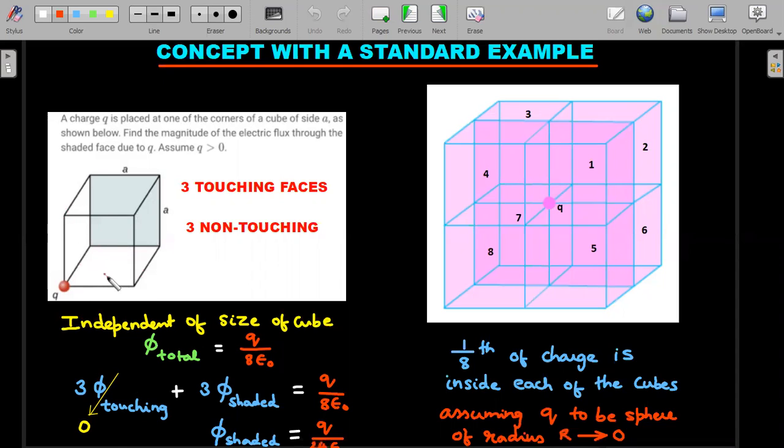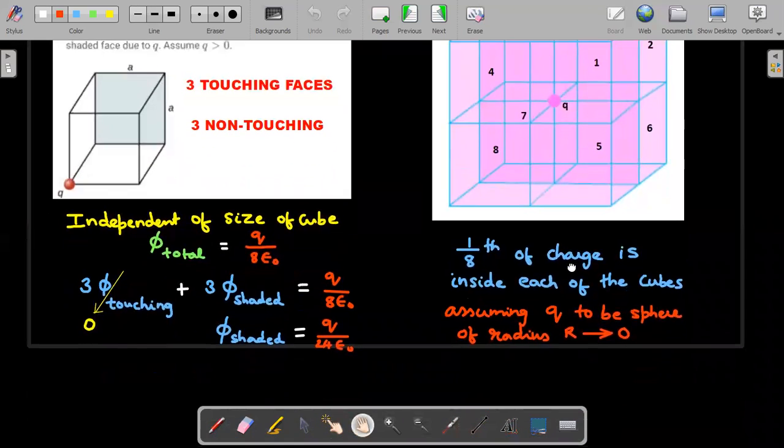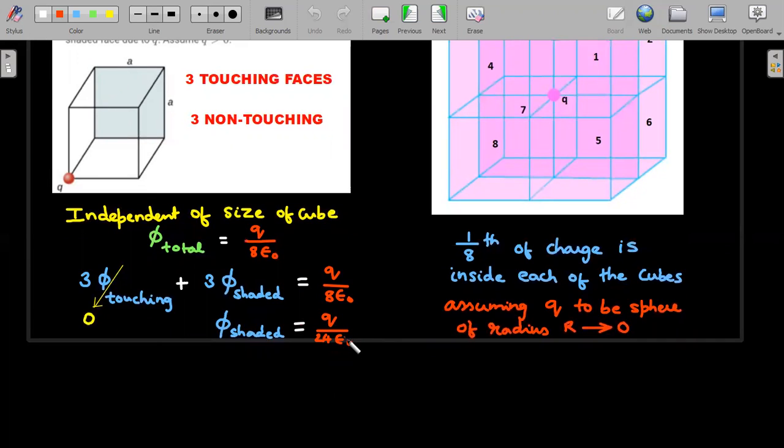I can write this as three times φ_shaded equals q/8ε₀, so by symmetry, the flux of this shaded region is q/24ε₀. The limiting idea ensures the point charge is made into a sphere, radius tending to zero. As radius tends to zero, we must check whether the fraction is determinate or not. Will this method always work? No, it doesn't. Whenever you have a point charge on the periphery of a Gaussian surface, it will not always work.